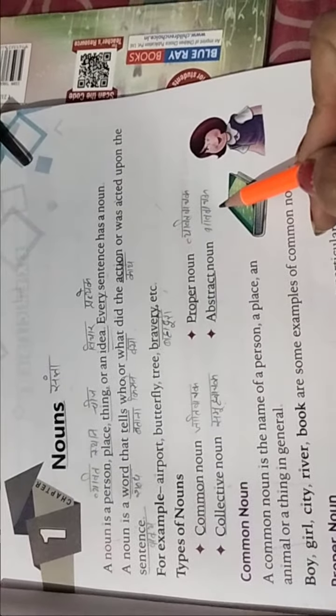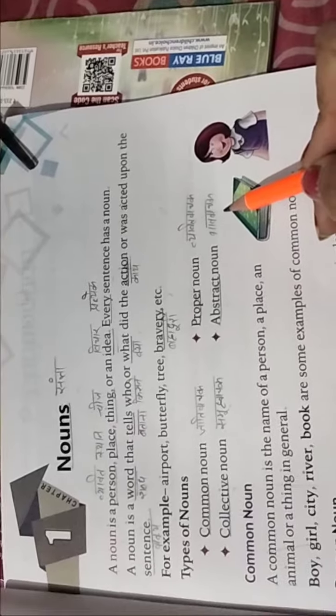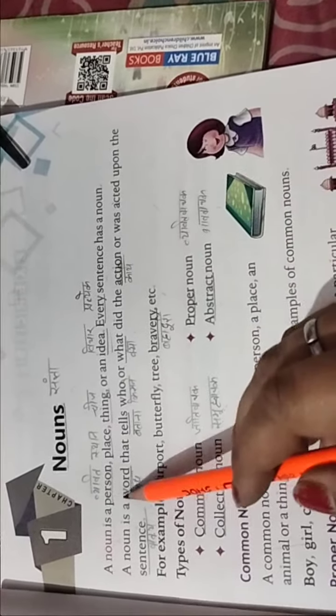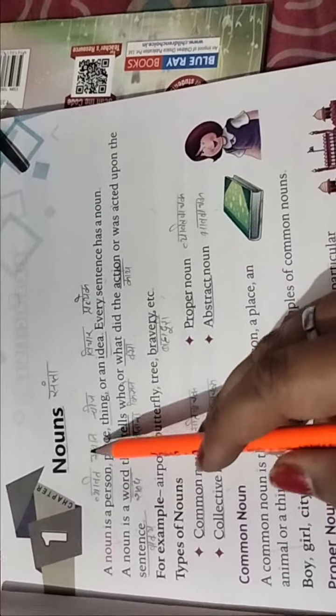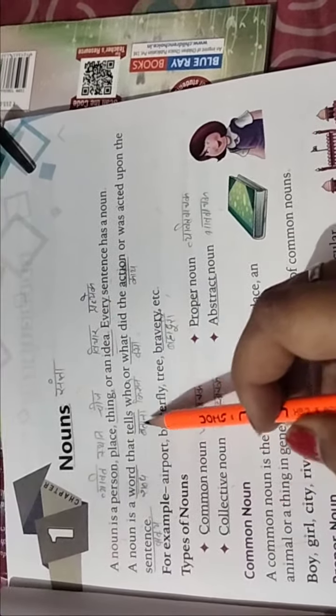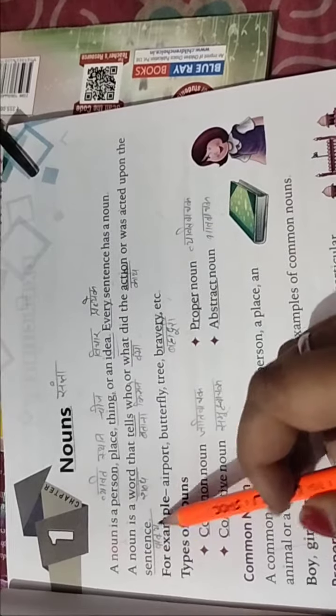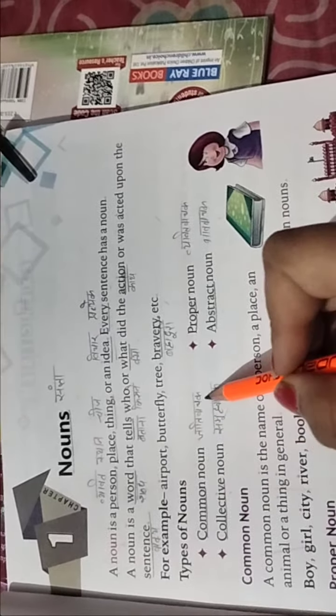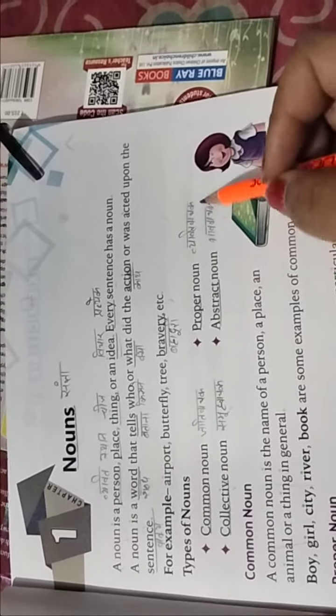Students, आज हम इतना ही पढ़ेंगे और इसमें हमारे जो कुछ हार्ड वर्ड्स हैं, आप बुक पर नोट करेंगे, जिसे की परसन व्यक्ति, प्लेस इस्थान, ठिंक चीज, आइडिया विचार, एवरी प्रतिक, वर्ड्स शब्द, टैल्स बताना हूँ किसने, वाट क्या, एक्षन कार्या, सेंटेंस वाक्या, ब्रेवरी बहादुरी, कॉमन जाती वाचक, प्रॉपर व्यक्ति वाचक.